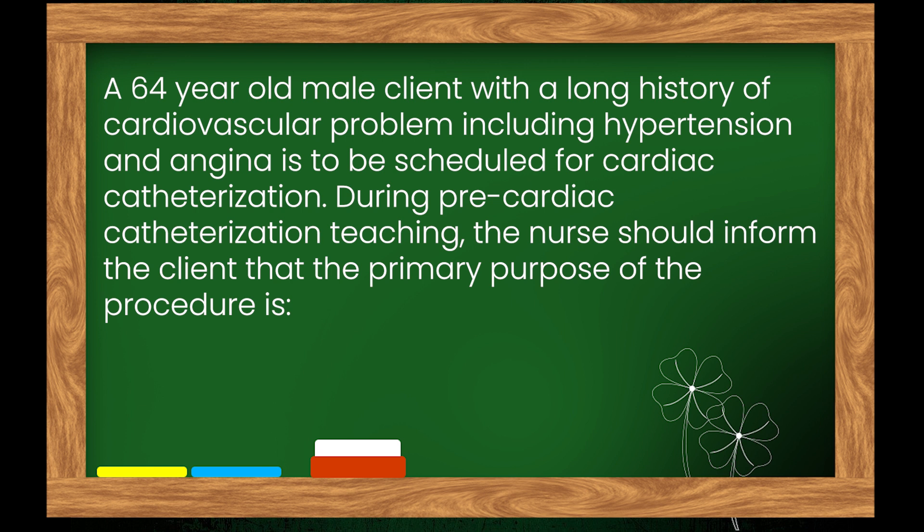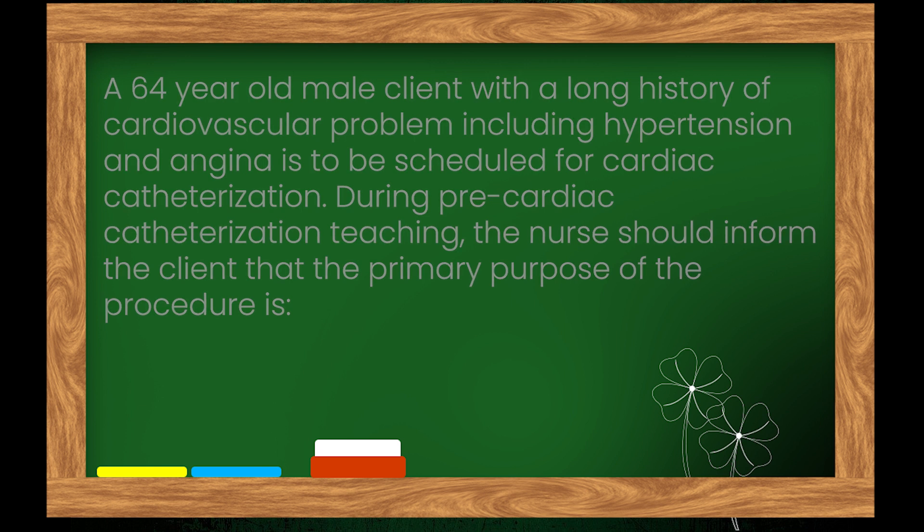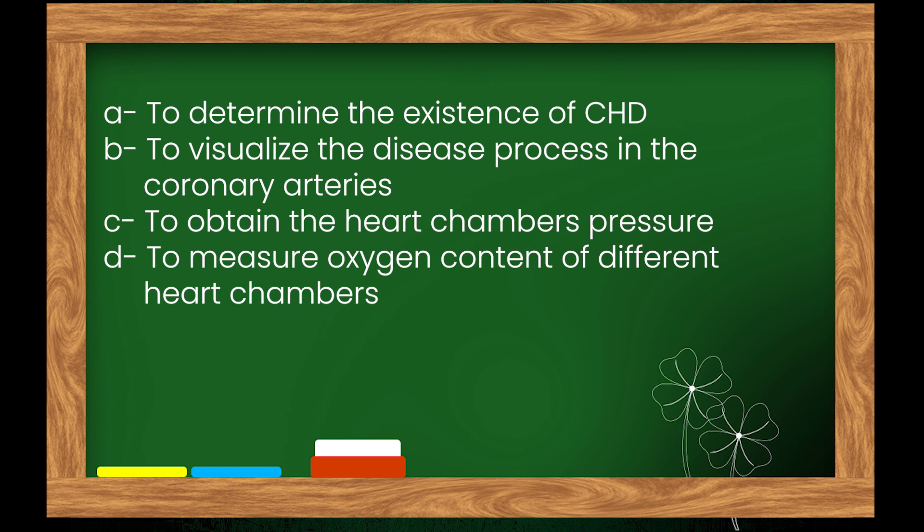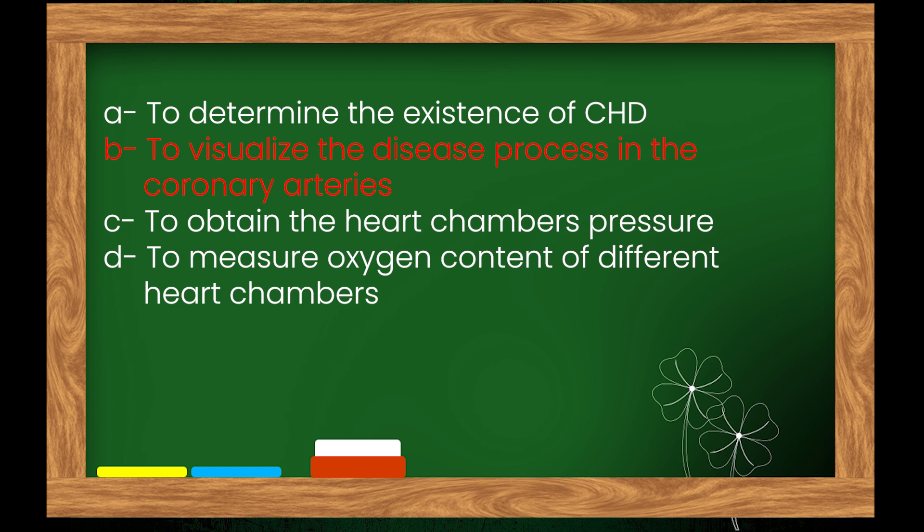Question 18: A 64-year-old male client with a long history of cardiovascular problems including hypertension and angina is scheduled for cardiac catheterization. During pre-cardiac catheterization teaching, the nurse should inform the client that the primary purpose of the procedure is — Options: A. To determine the existence of CHD, B. To visualize the disease process in the coronary arteries, C. To obtain heart chamber pressures, D. To measure oxygen content of different heart chambers. The right answer is option B: to visualize the disease process in the coronary arteries.